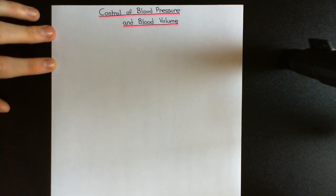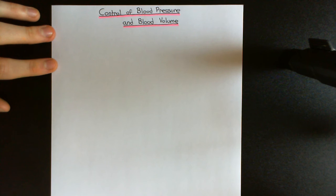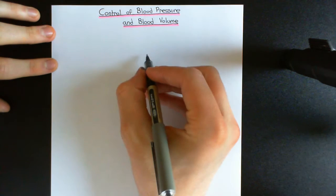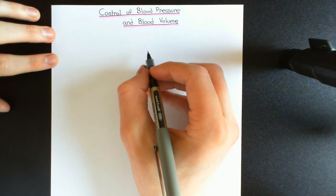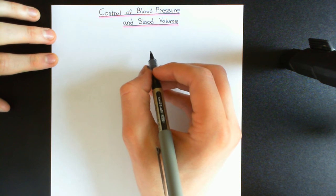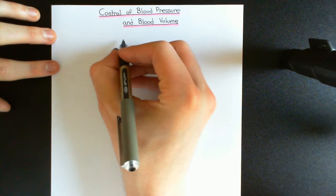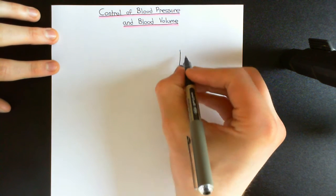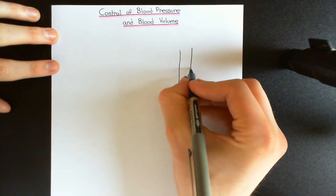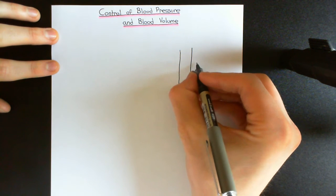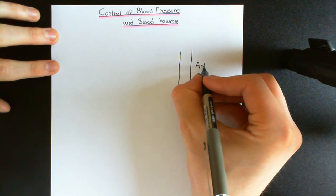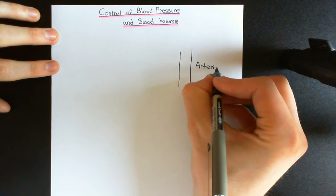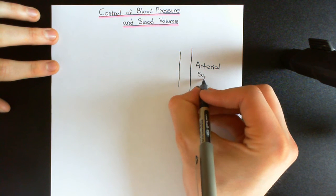We're going to start by building the blood vessels. Initially, I'm going to imagine that I haven't put any blood into these blood vessels — all I want to do is build them. The two major different types of blood vessels I'm going to build are the arteries and the veins, so I'm going to build the arterial system and the venous system.